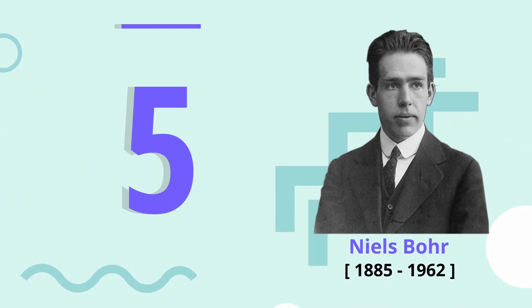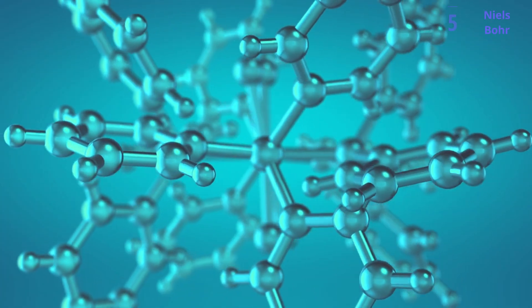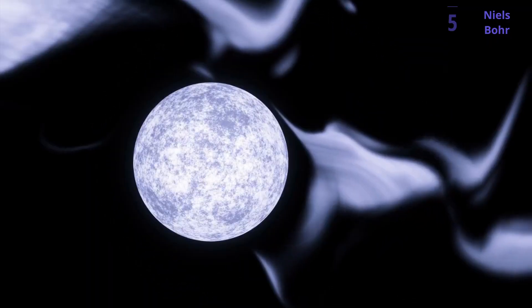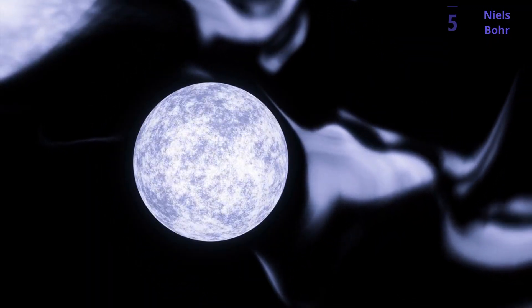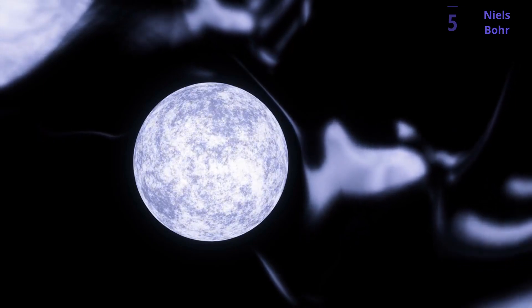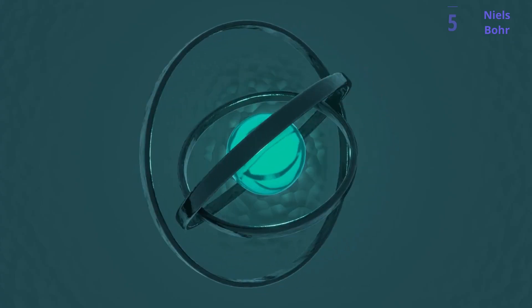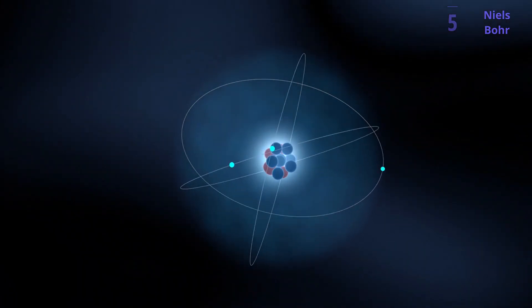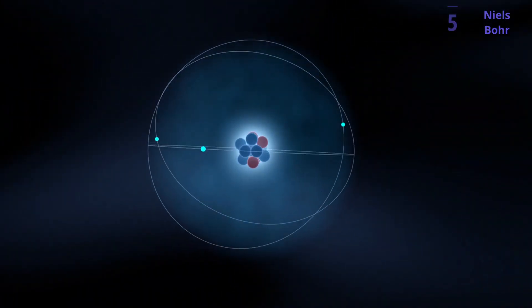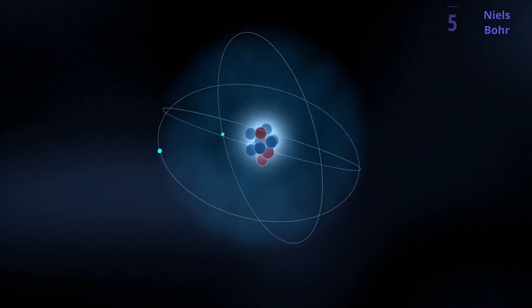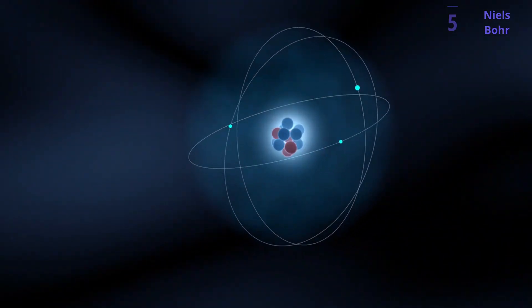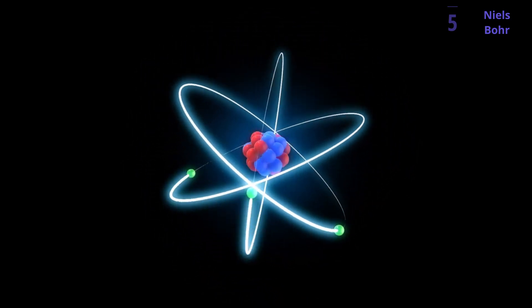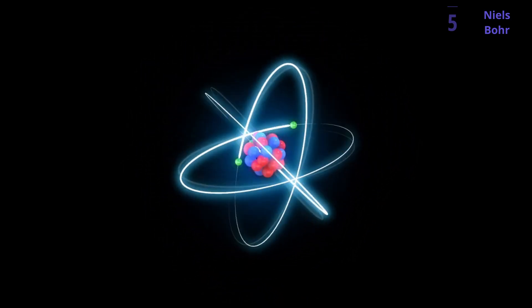Number 5, Niels Bohr. Imagine a world where atoms weren't miniature solar systems, but something far stranger. That's the world Niels Bohr revealed. Before him, scientists thought atoms resembled tiny planets with electrons whizzing around a central core. Enter Bohr, a brilliant Danish physicist who proposed a revolutionary model. He envisioned the atom like a miniature solar system, but with electrons occupying specific energy levels or shells around the nucleus, much like planets orbiting the sun. This planetary model of the atom was a huge leap forward, laying the foundation for our modern understanding of atomic structure.